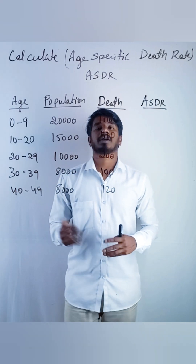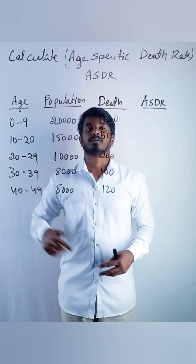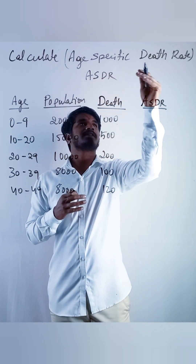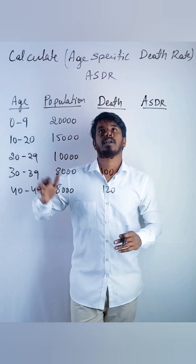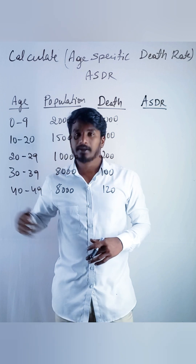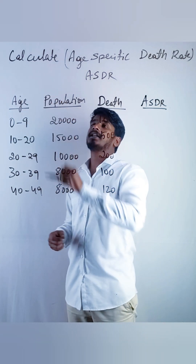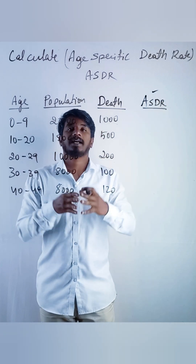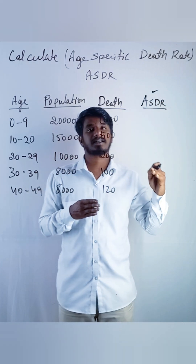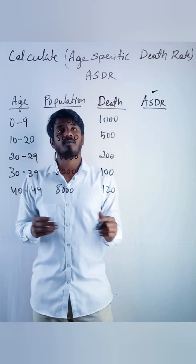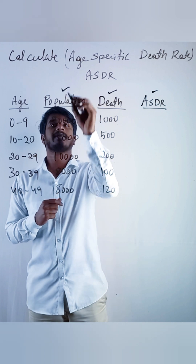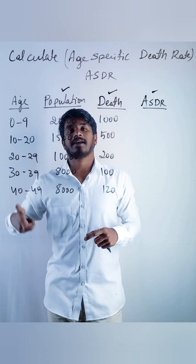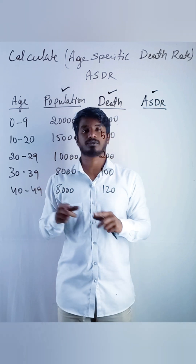Hello everyone, a warm welcome to all of you. In this video we are going to calculate Age Specific Death Rate (ASDR). In the given data we have age, population, and death. We need to calculate ASDR. The formula is: death divided by population, multiplied by 1000. We need to calculate for each age group.